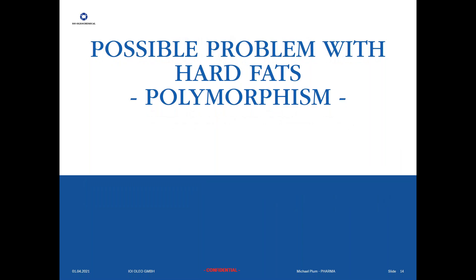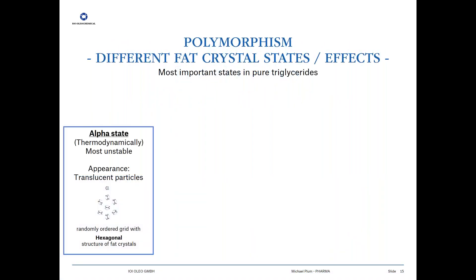There is a constant danger in combination with hard fats called polymorphism. A hard fat is a more or less complex mixture of fat crystals, and these fat crystals occur in certain states. Starting with the so-called alpha state, which from a thermodynamic point of view is the most unstable state. The appearance of these particles is somewhat translucent, with a randomly ordered hexagonal structure of fat crystals. Over time, there are certain state transitions.